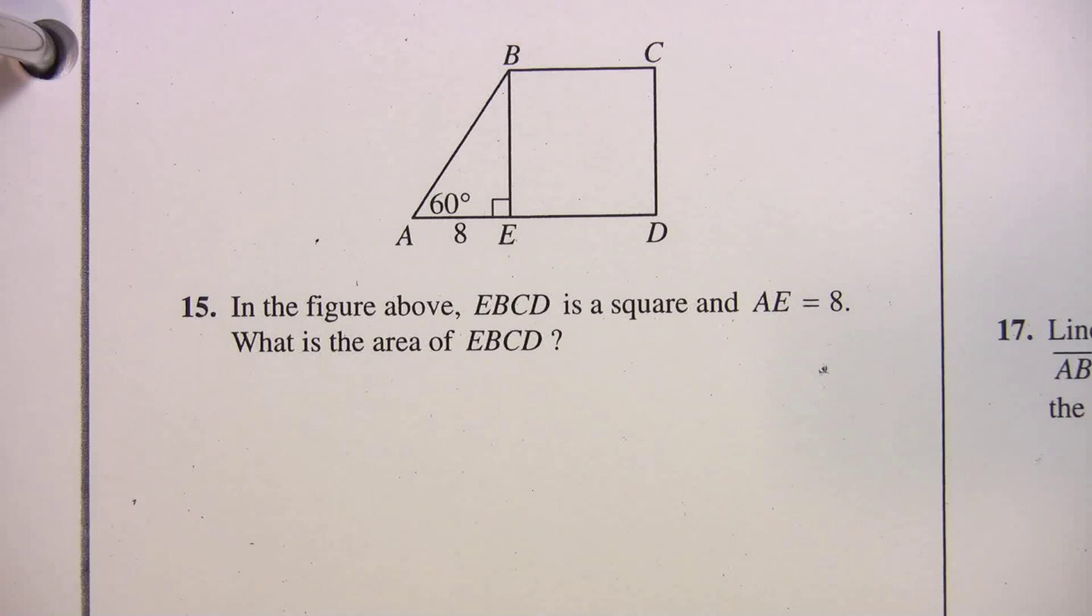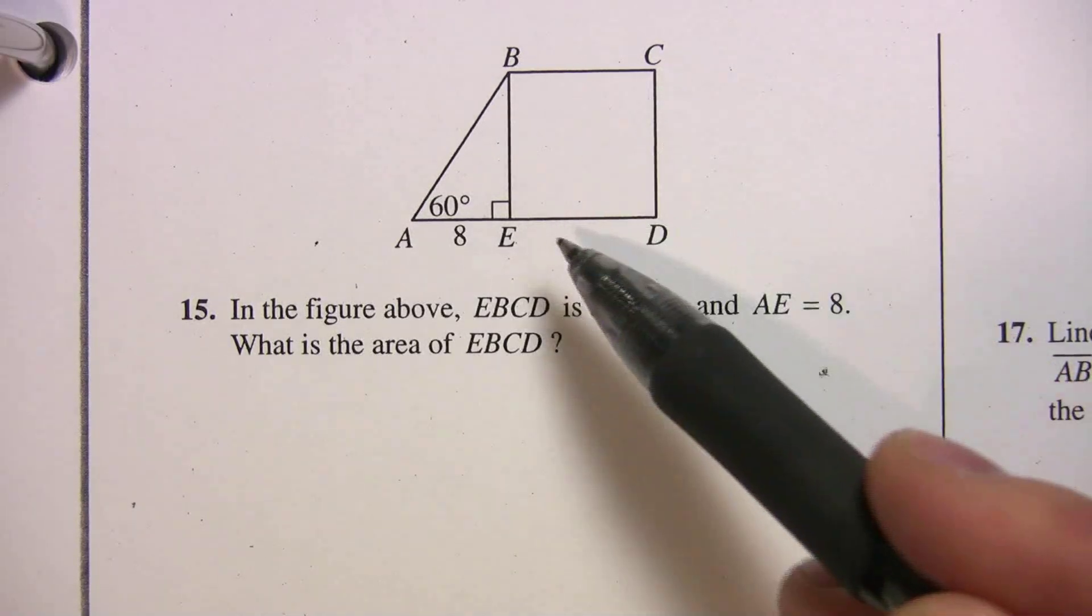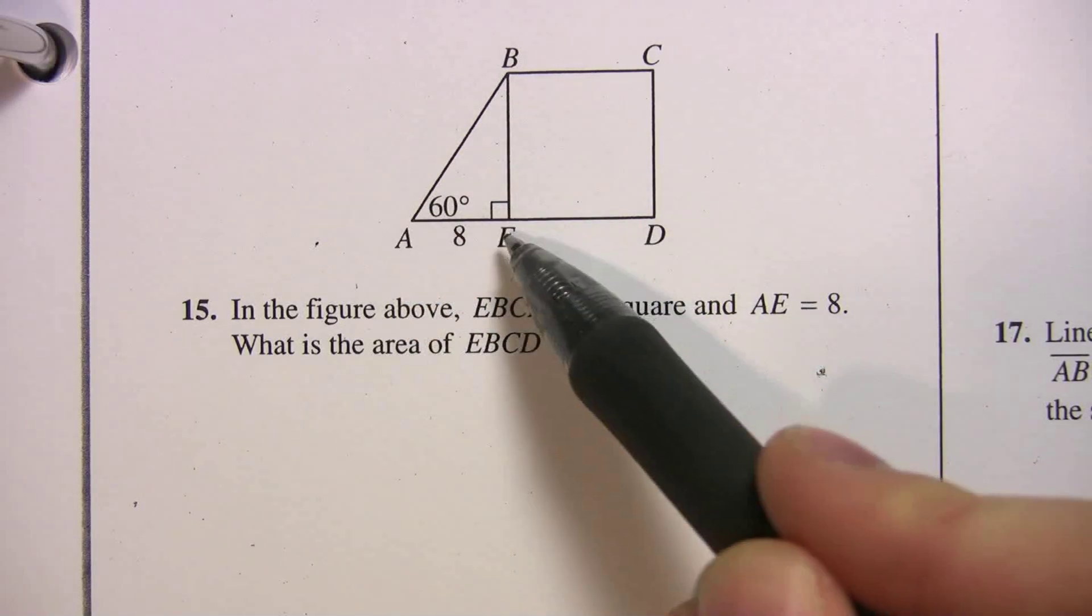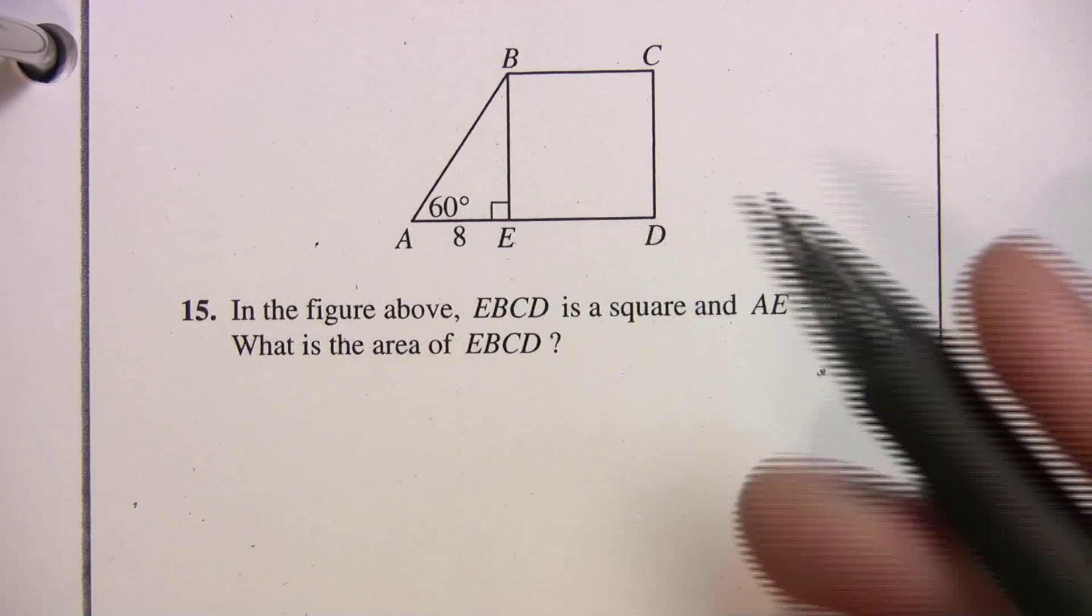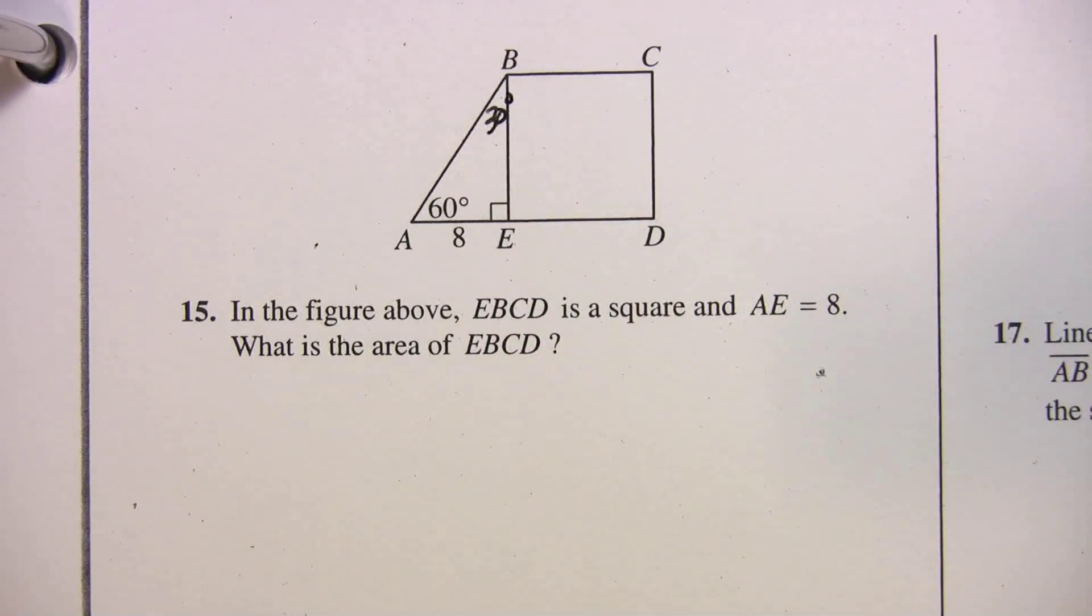It says in the figure above, EBCD is a square and AE equals 8. What is the area of EBCD? So they're looking for the area of the square. We have a 30-60-90 triangle here. If this is 90 and that's 60, by default, that has to be 30.